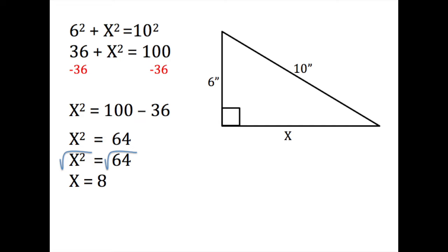But we want to know what the answer to x is. So we take the square root of both sides. The square root of x² is x, and the square root of 64 is 8.